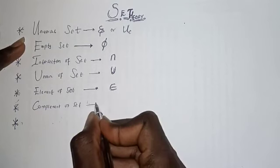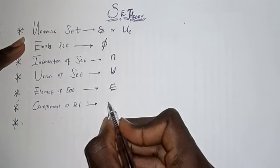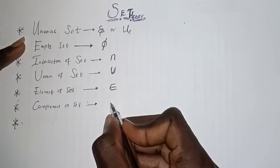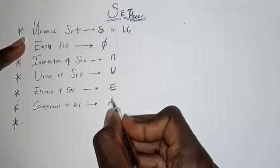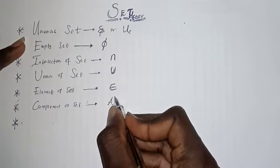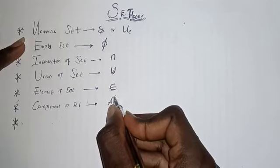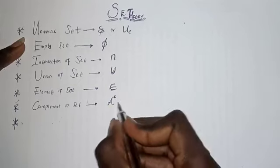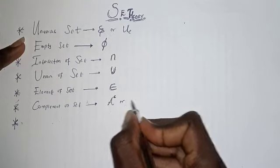We also have complements. Like saying you have a set, let's say you have a set A, such that the complement of this set implies that you have a small index c on A, just a small letter c, or you can decide to write it differently.